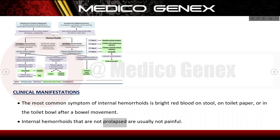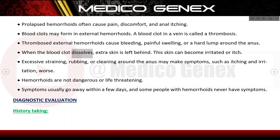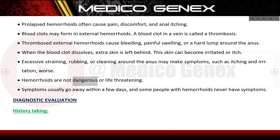Internal haemorrhoids that are not prolapsed are usually not painful. Prolapsed haemorrhoids often cause pain, discomfort, and anal itching. Blood clots may form in external haemorrhoids — a blood clot in a vein is called a thrombosis. Thrombosed external haemorrhoids cause bleeding, painful swelling, or a hard lump around the anus. When the blood clot dissolves, extra skin is left behind, which can become irritated or itch. Haemorrhoids are not dangerous or life-threatening.